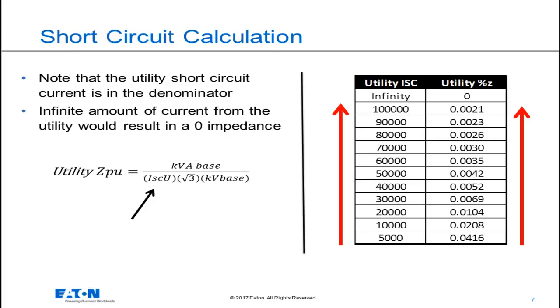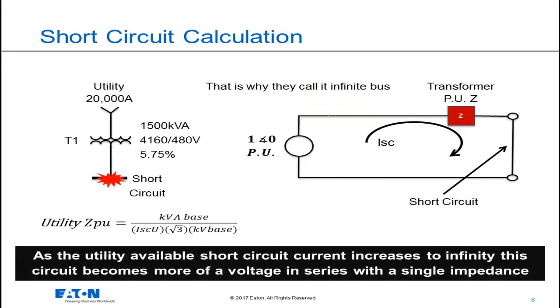This is significant because it tells us that as the utility available short circuit current gets larger, approaching infinity, the equivalent utility impedance gets smaller and approaches 0. Infinite amount of current from the utility results in 0 impedance of the utility. Look at this circuit again.